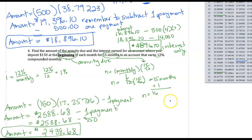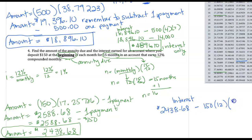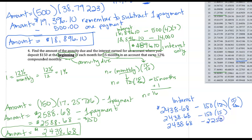To find our interest, we compare the amount put in the account to the amount at the end. The amount at the end is $2,438.68. We subtract the $150 payments made 12 times a year for 15/12 of a year — or simply 15 payments. $150 times 15 payments equals $2,250 deposited into the account. The account has a total of $2,438.68, so the interest is the difference: $188.68.